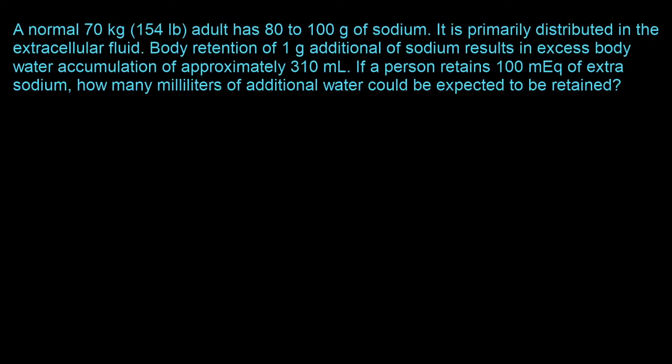Question 5: A normal 70 kg (154 lb) adult has 80–100 grams of sodium, primarily distributed in the extracellular fluid. Body retention of one gram of additional sodium results in approximately 310 milliliters of excess water accumulation. If a person retains 100 milliequivalents of extra sodium, how many milliliters of additional water could be expected to be retained?